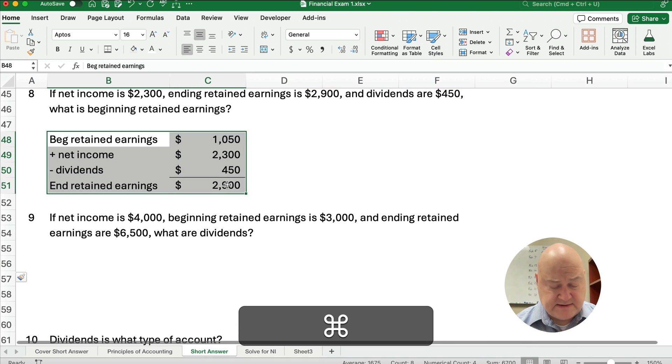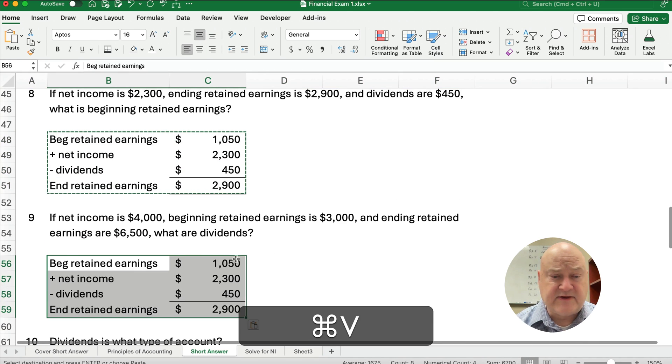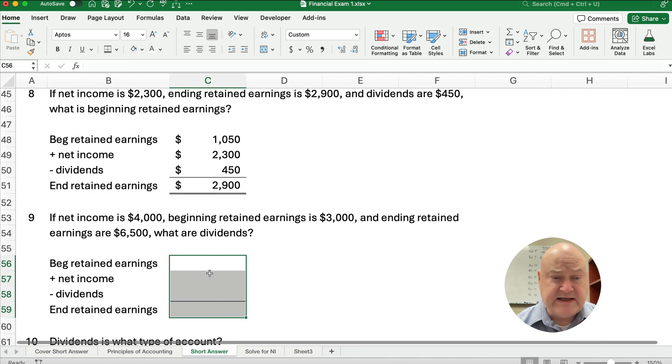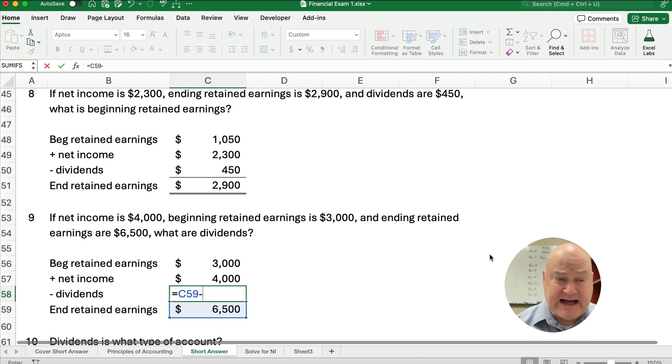We have another one that's related to this. If net income is $4,000, beginning retained earnings is $3,000, ending retained earnings is $6,500, then what are dividends? Well, let's just work backwards. $6,500 minus the net income minus the beginning. We're left with dividends must be $500. Now, this is negative here. We don't have to show it as negative. You know it reduces. So the answer is $500. What we do is $7,000 minus some number equals $6,500, and that's your dividend amount.